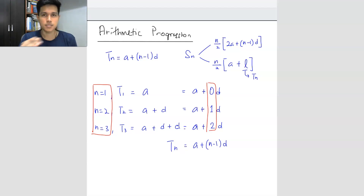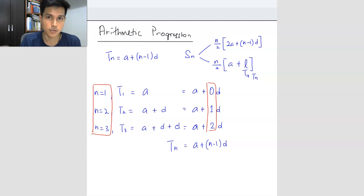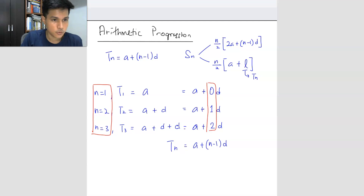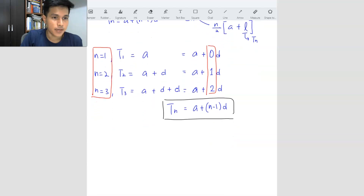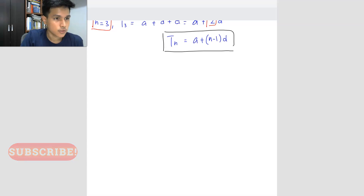You're basically showing the pattern of how you calculate the first term, second term, third term. If you want to find the TN formula, you just take the N value and subtract 1. So TN is quite straightforward — I won't spend too much time explaining this. The next one is the SN formula, which is much more complicated, so I need you to watch closely.